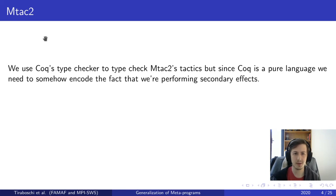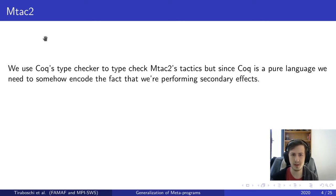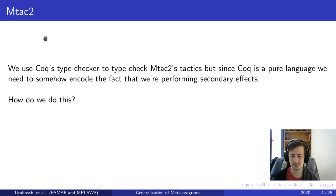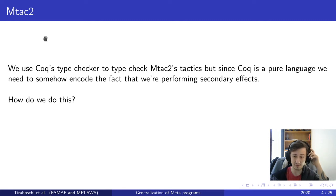When we use Coq's type checker to type check Mtac2 tactics, because Coq is a pure language we need to somehow encode the fact that we are actually performing side effects. The option we chose in Mtac2 is to use something that Haskell has been using for at least 30 years, which is monads.